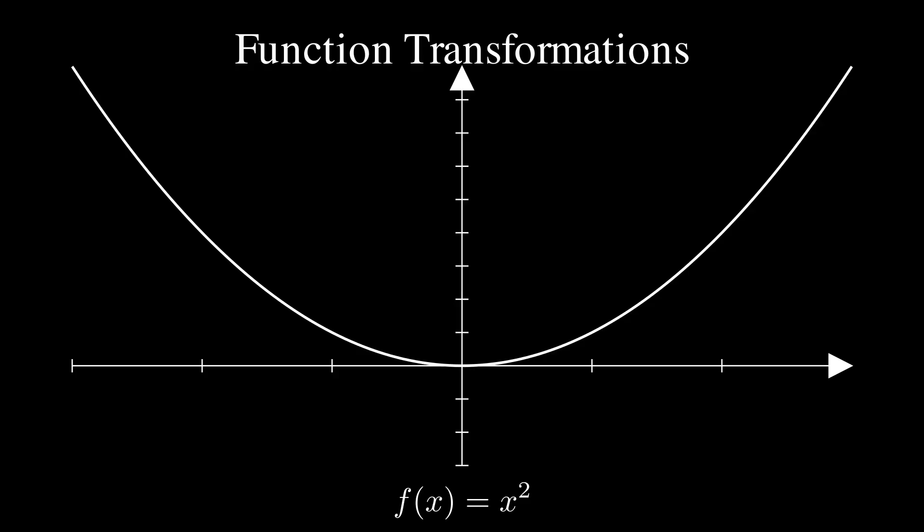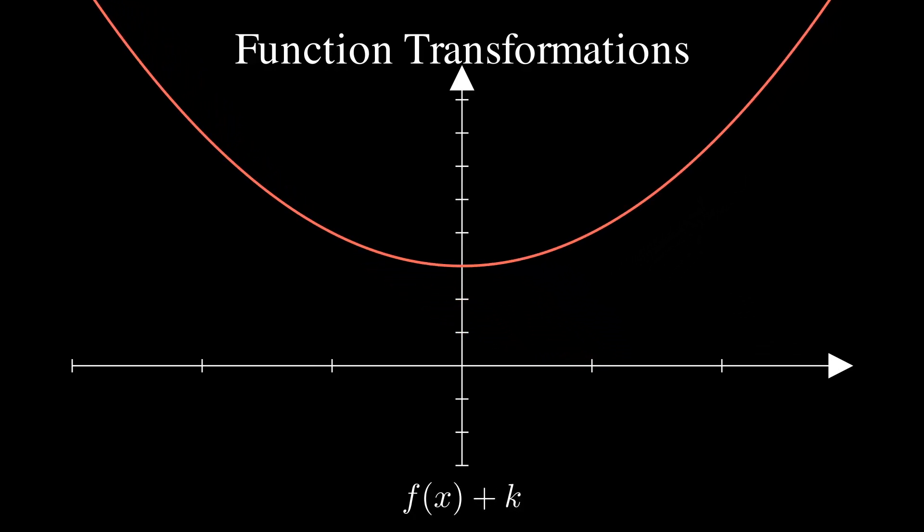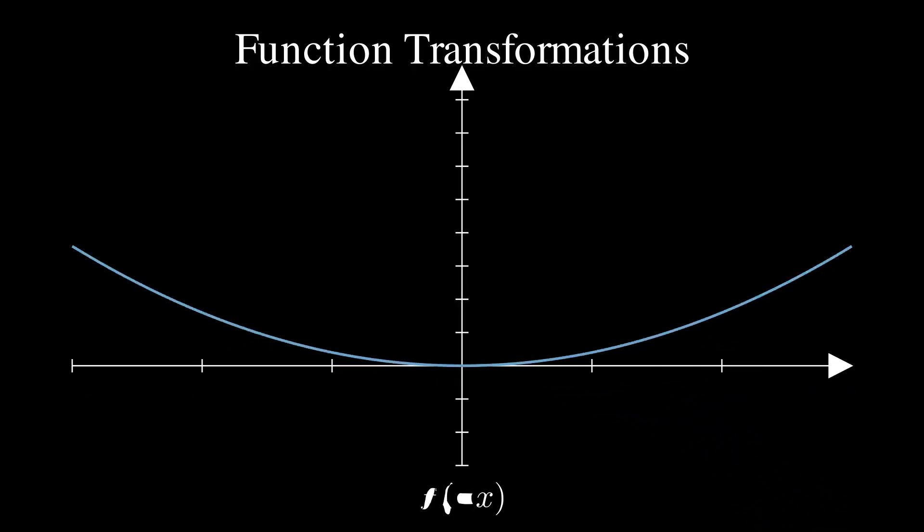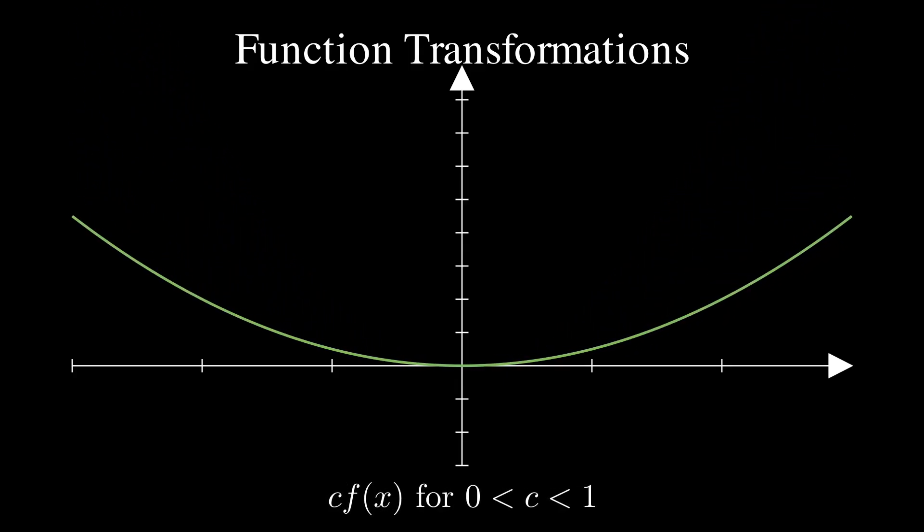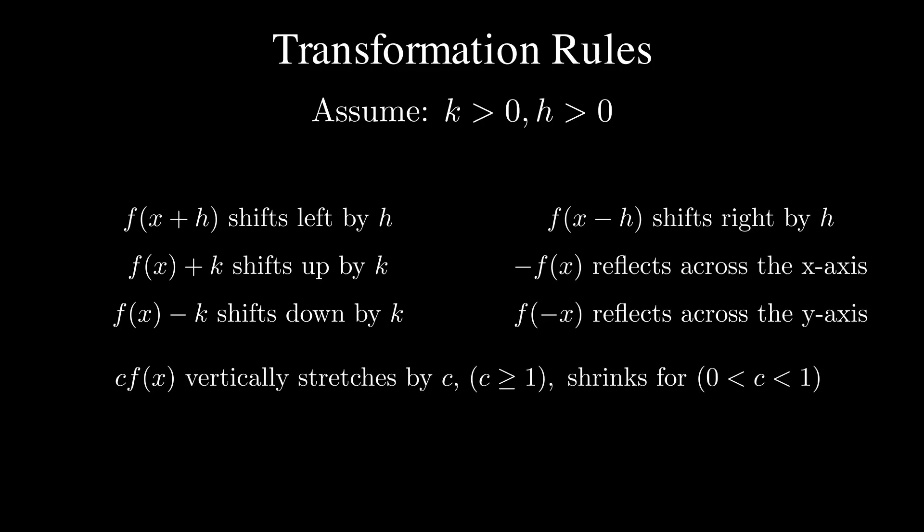Next up, we're going to talk about how to transform a function. So given the parent function f(x) = x squared, we can apply the following. The following are the rules for transformations, assume k positive, h positive. We can now shift this function to the left or shift it to the right. We can also shift it up or down. And then we can also reflect it across the x-axis and the y-axis. Lastly, we can vertically stretch or shrink depending on the parameter c.